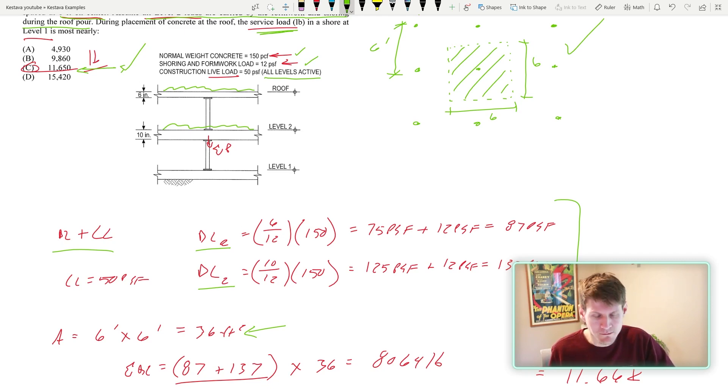They give you a dead load of the self weight of the formwork itself, formwork and shoring, all that stuff weighs something. So you have to account for it. And then they give us a construction live load and they say all levels active. So there's 50 on the roof, there's 50 on the second floor. I know I did this kind of backwards in explanation, but I needed my loading and I needed my tributary area for one of the shoring poles.